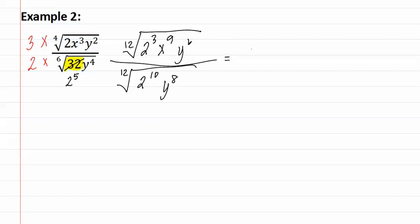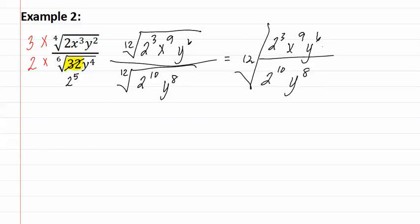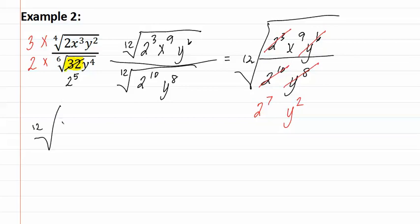Now that these two roots match, we can combine them into one large root using the quotient rule, giving us 2 to the third, x to the ninth, y to the sixth over 2 to the tenth, y to the eighth. We have 3 twos on top and 10 twos on bottom, so all of those are gone and we have 2 to the seventh. The x's are only on top, so they cannot be reduced. For the y's, we have 6 on top and 8 on bottom, leaving 2 more on the bottom. We now have the twelfth root of x to the ninth over 2 to the seventh, y to the second.